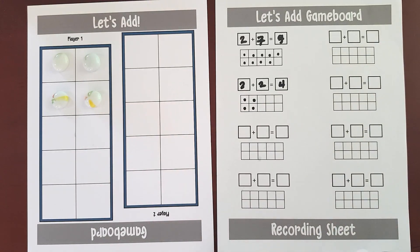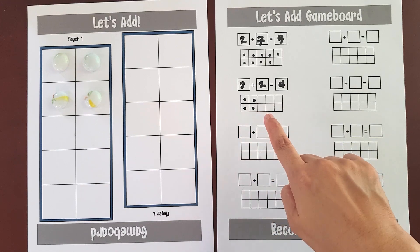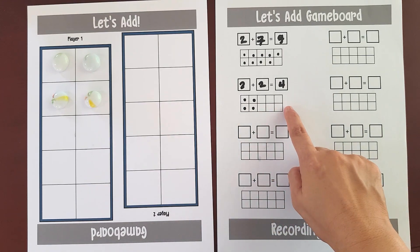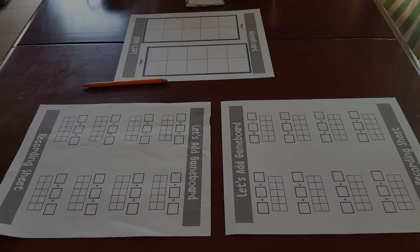Okay, so that means 1, 2, 3, 4. So 2 plus 2 makes 4.